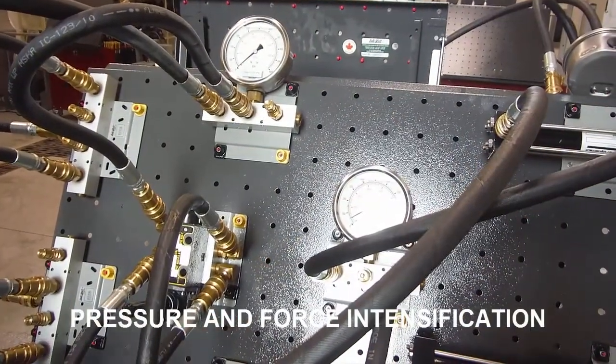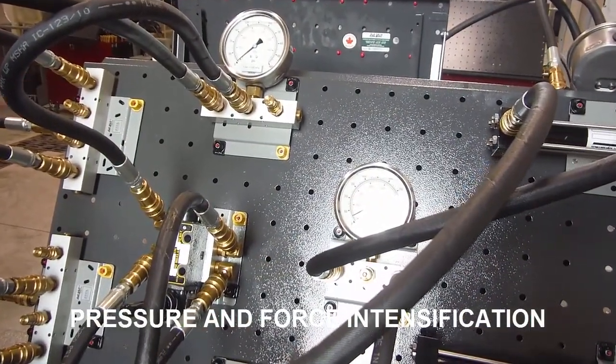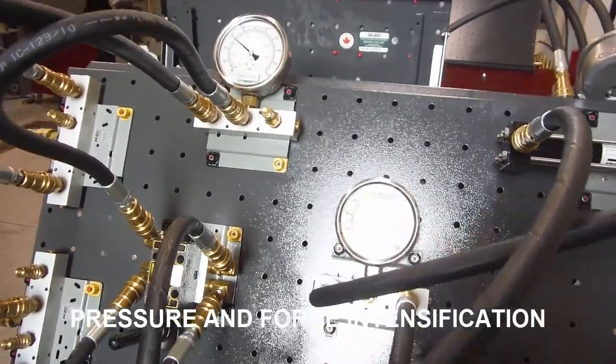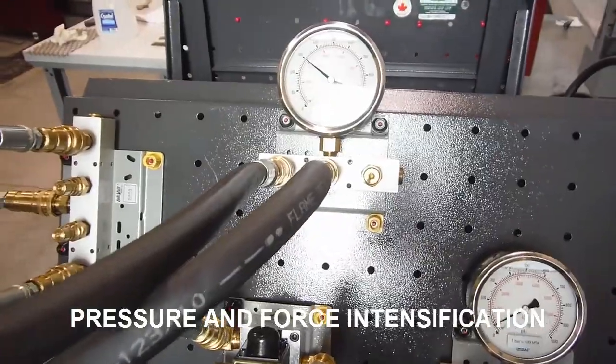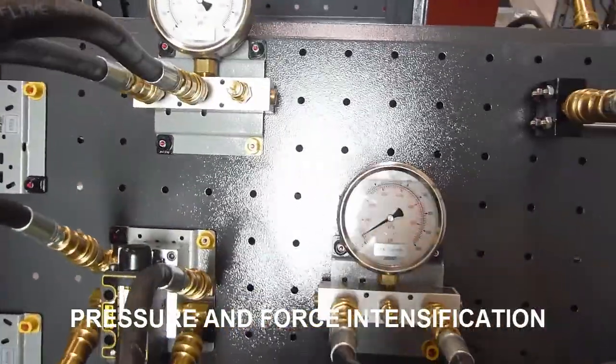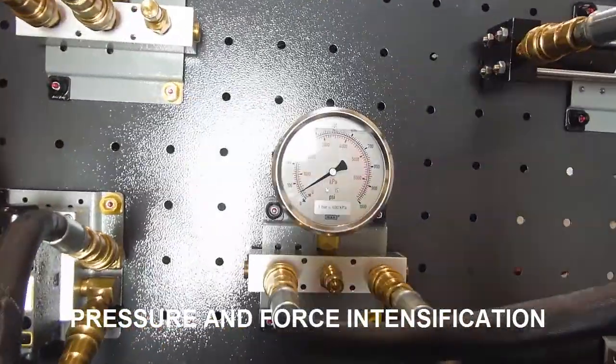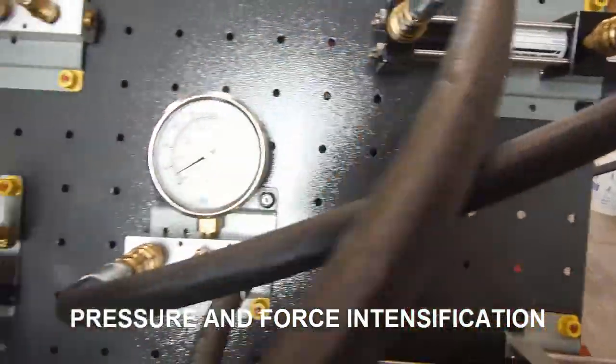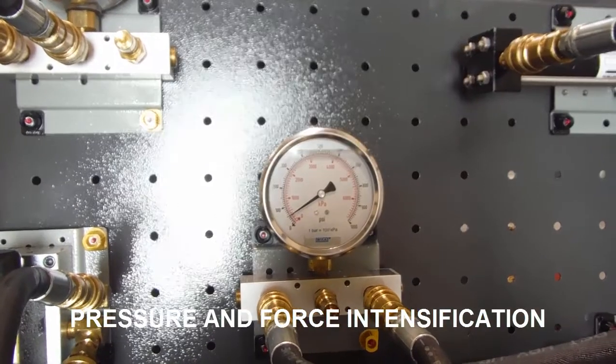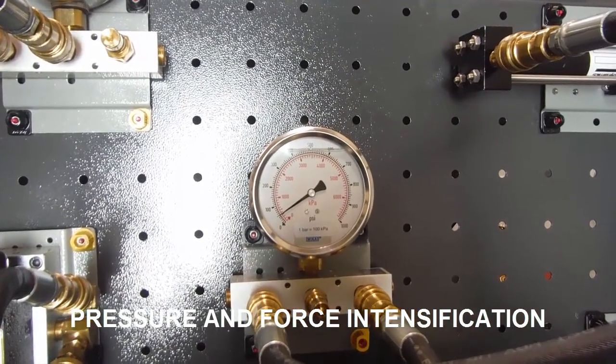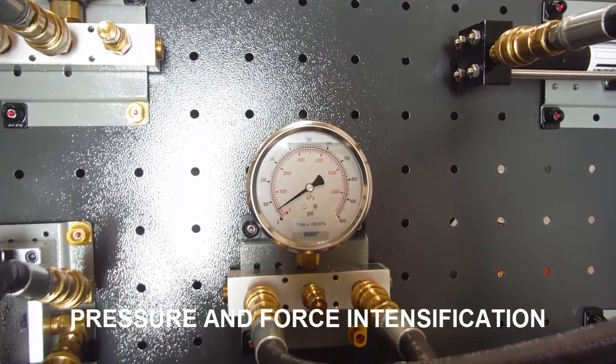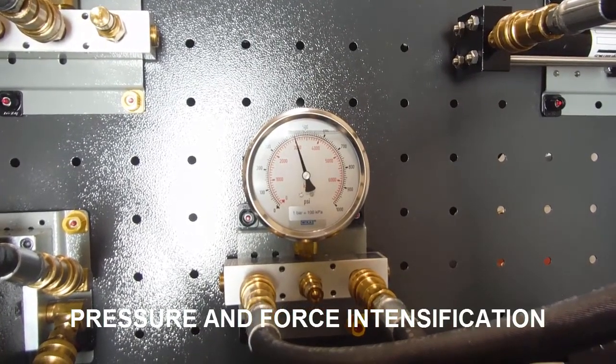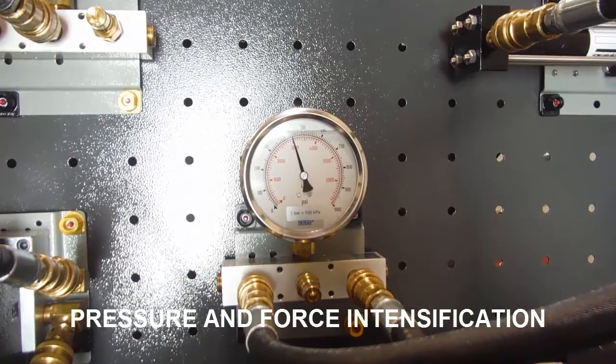All right. So we're going to be looking at the pressure and force intensification. I'm going to turn on our system, and we've got system pressure of 300 psi, and that pressure is being routed to the cap end of our first cylinder. Our second gauge here is in between the cylinders, so we will see a higher pressure coming from the first cylinder and into the cap end of the second cylinder. So right around 450 psi.